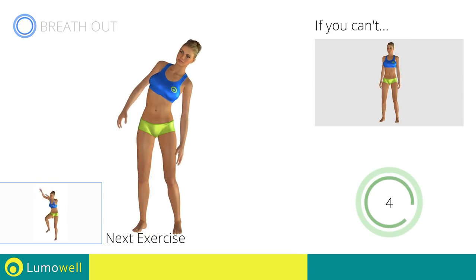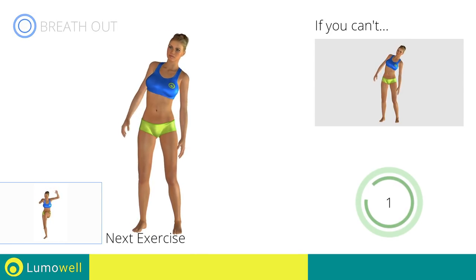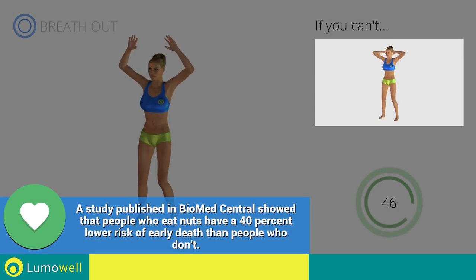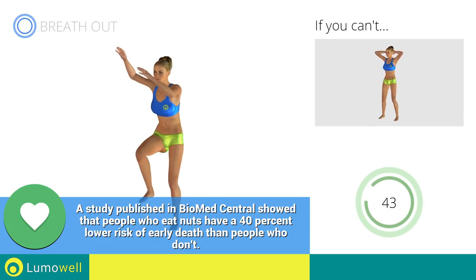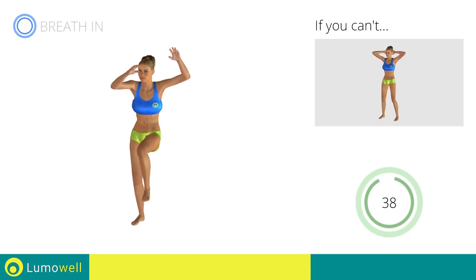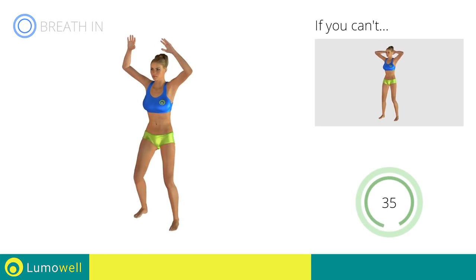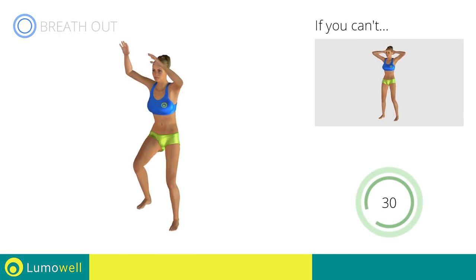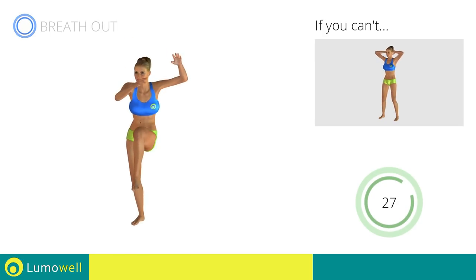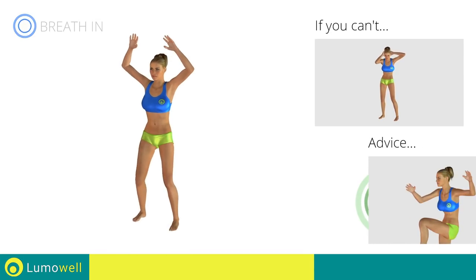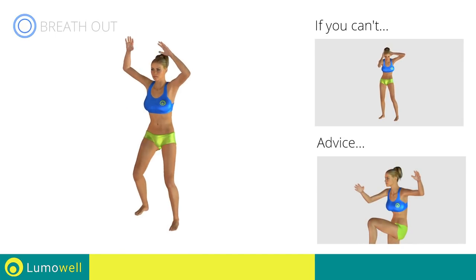Next exercise: standing cross crunch. Go! If you cannot do it, try not lifting your leg and concentrate on your bust. Keep the abdomen constantly tight. Do not strain your neck — stare at a fixed point in front of you to help you.